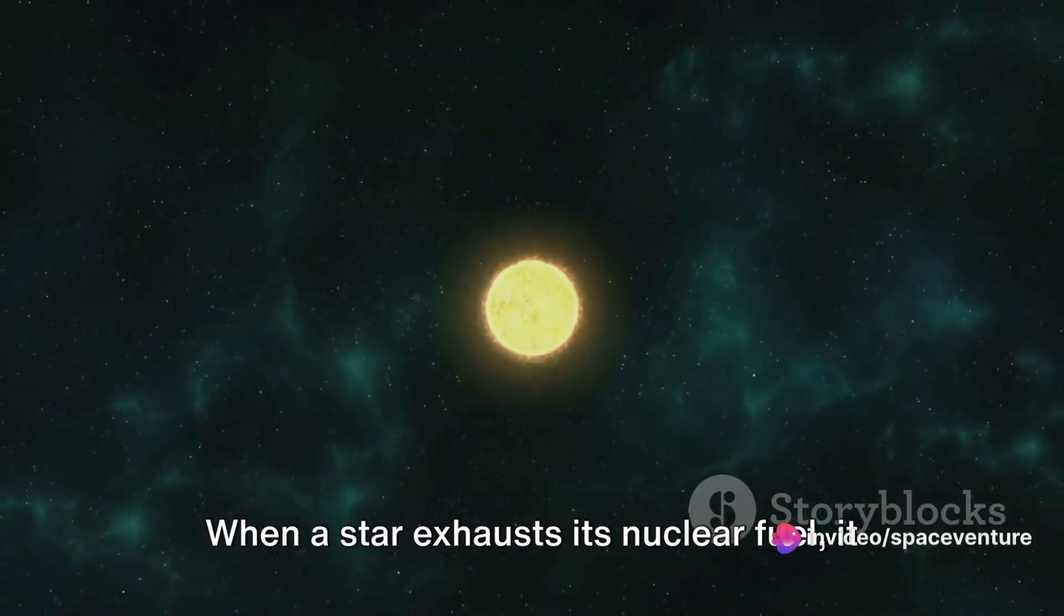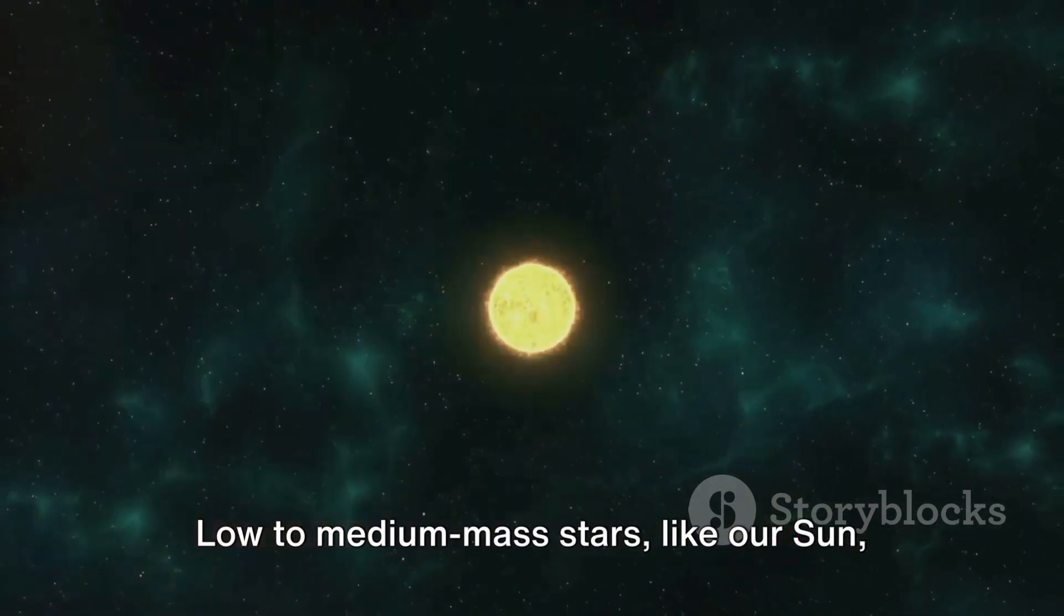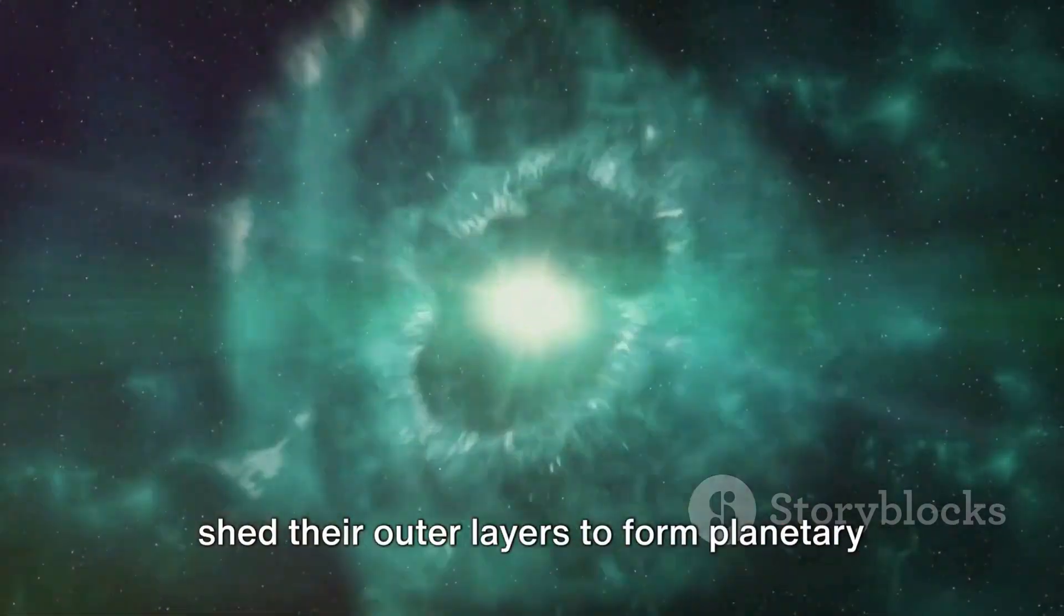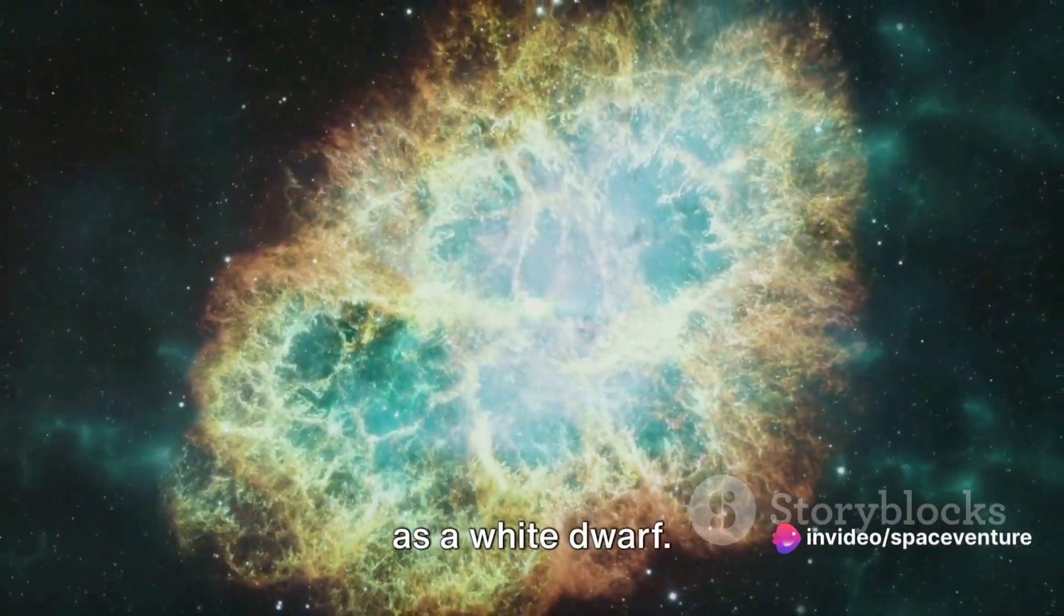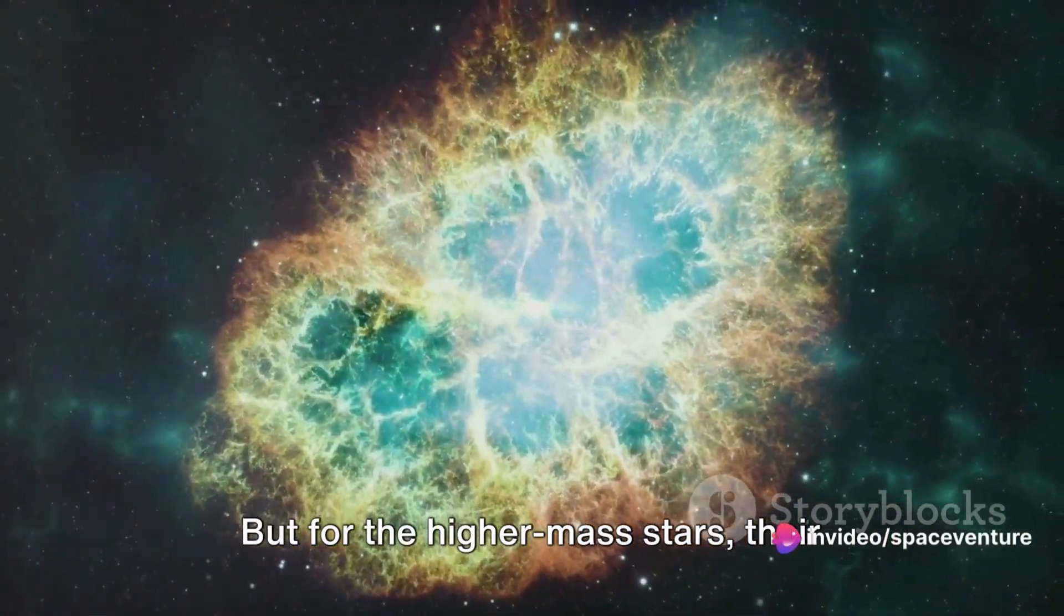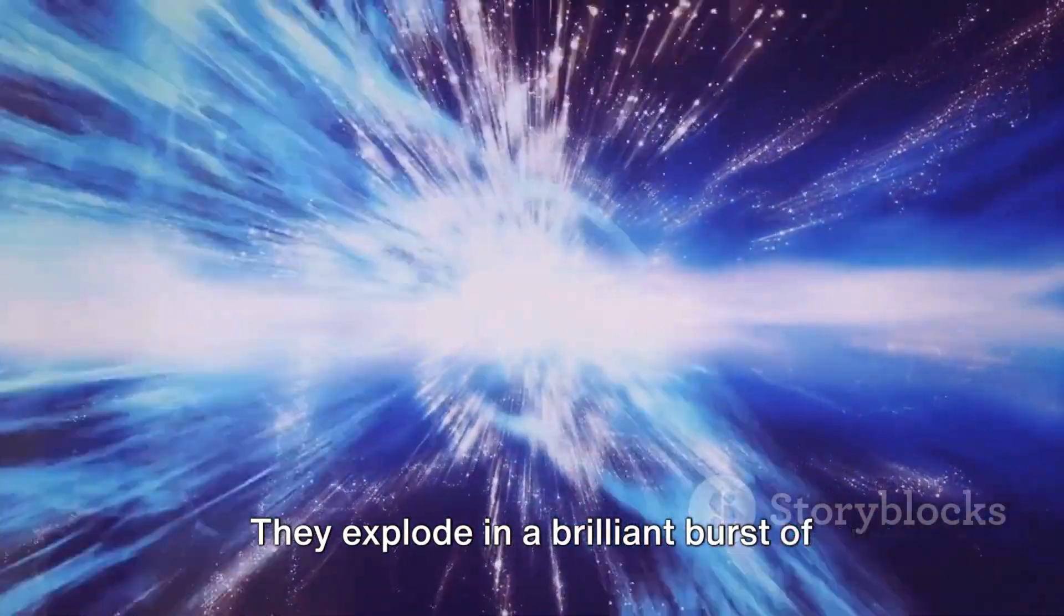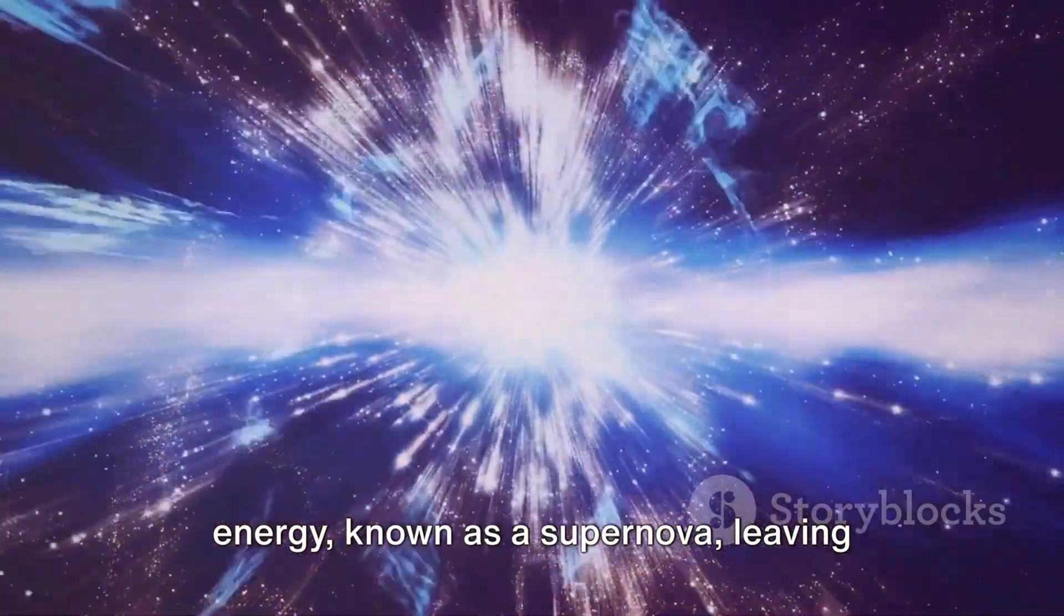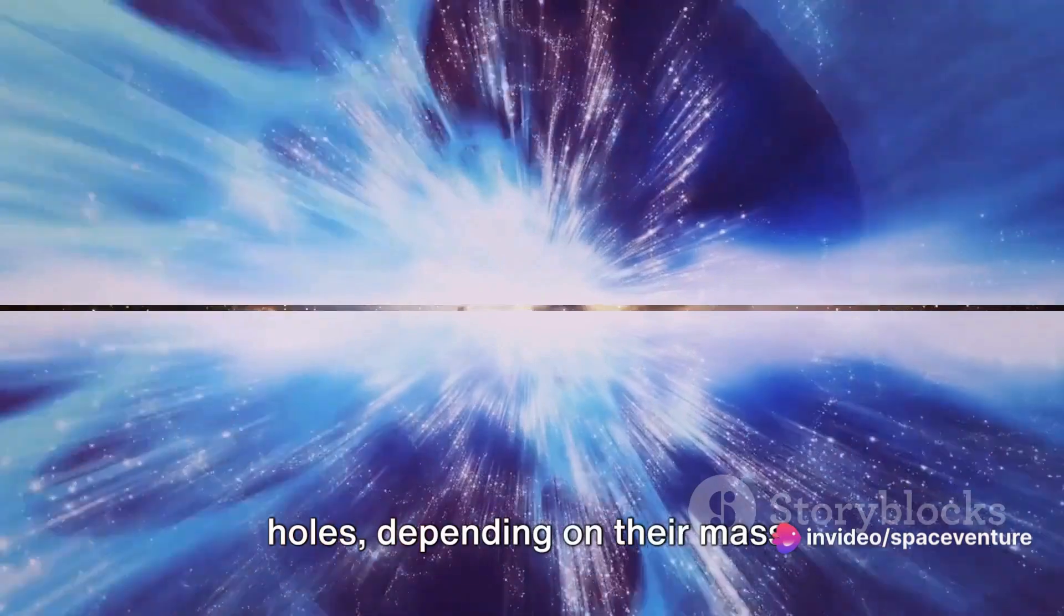When a star exhausts its nuclear fuel, it meets its end. Low-to-medium-mass stars, like our sun, shed their outer layers to form planetary nebulae, leaving behind a dense core known as a white dwarf. But for the higher-mass stars, their death is far more dramatic. They explode in a brilliant burst of energy known as a supernova, leaving behind either neutron stars or black holes, depending on their mass.